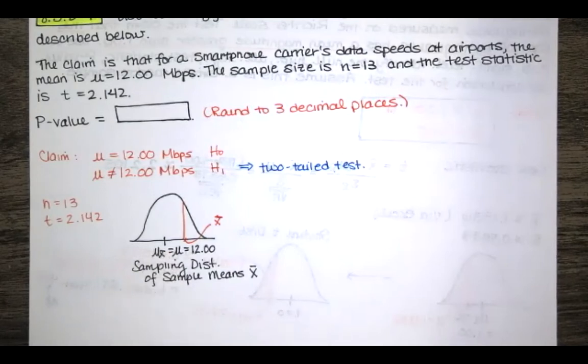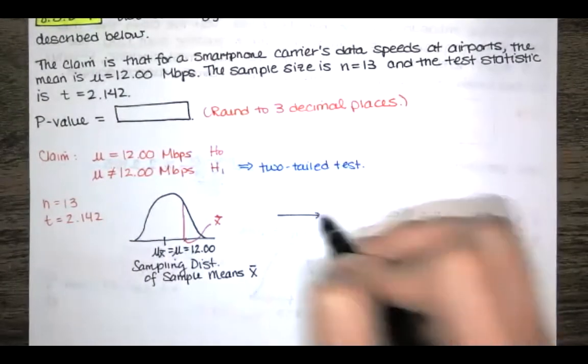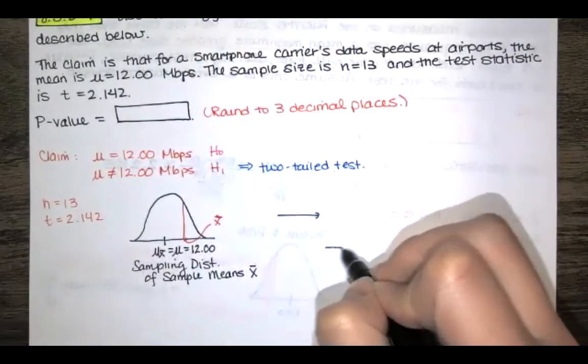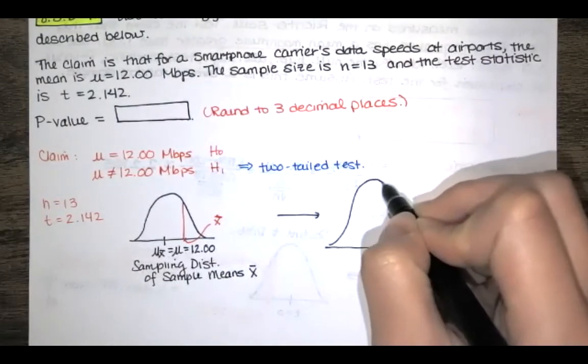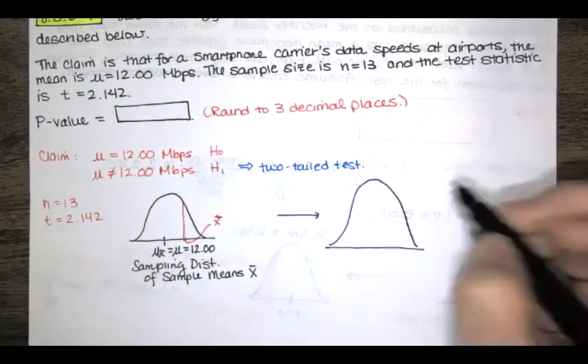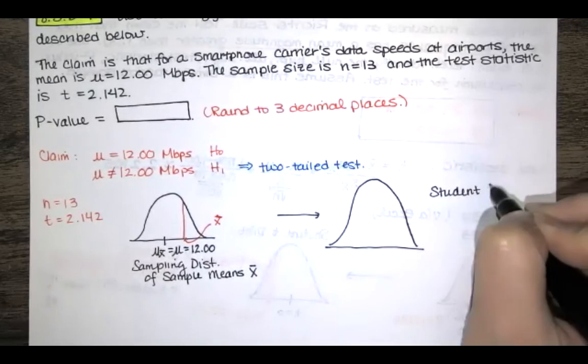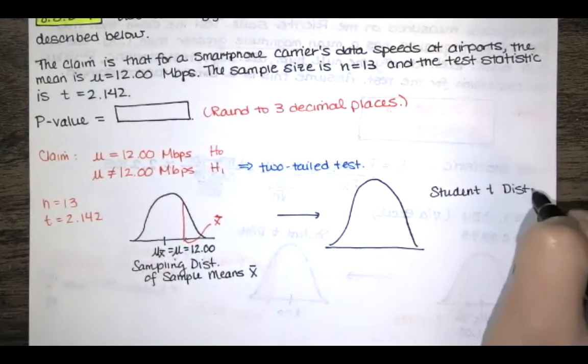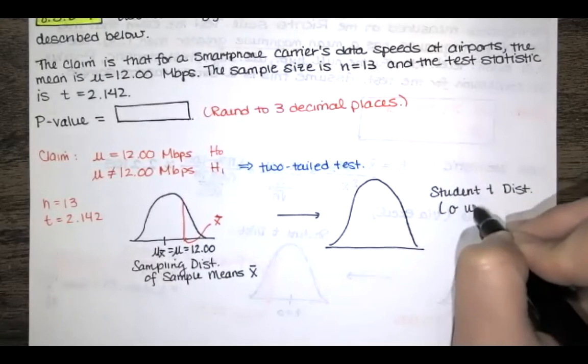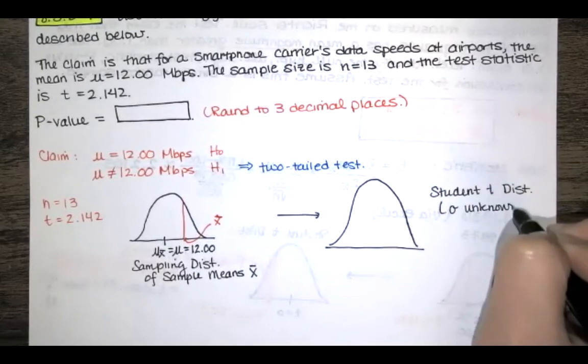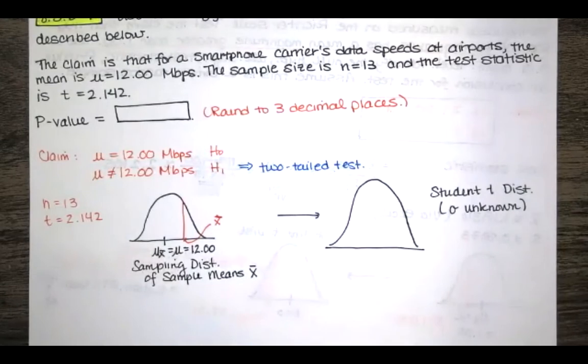Well in order to figure that out we need to convert this sampling distribution of the sample means to a student t distribution and we're converting to a student t distribution because the population standard deviation is not known. It's because sigma that's our symbol for the population standard deviation it's unknown.